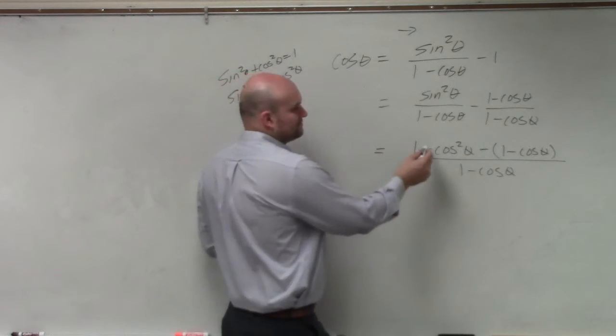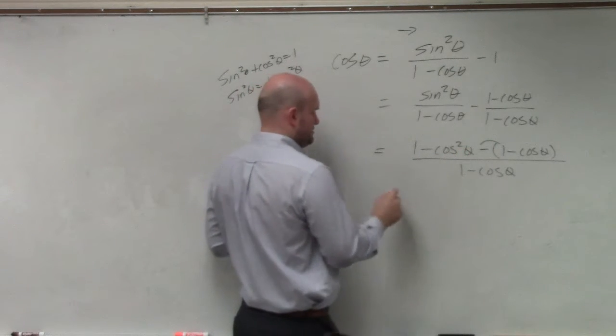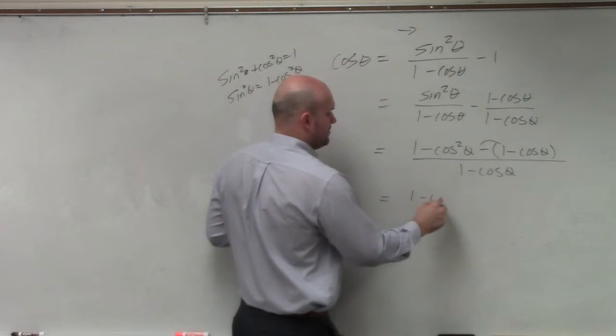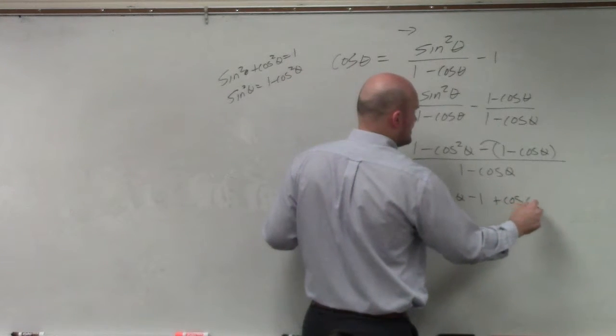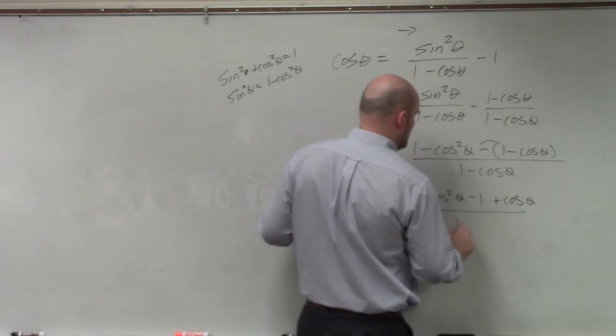So now if I distribute, that becomes a negative 1. So let's write this as 1 minus cosine squared of theta minus 1 plus cosine of theta all over 1 minus cosine of theta.